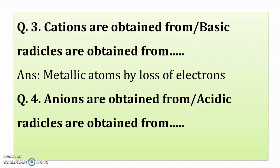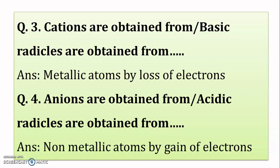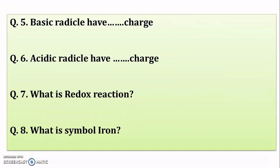The same question may be asked about anions, also called acidic radicals. Anions are obtained from non-metallic atoms by the gain of electrons. Basic radicals — also called cations — carry a positive charge, while acidic radicals carry a negative charge.